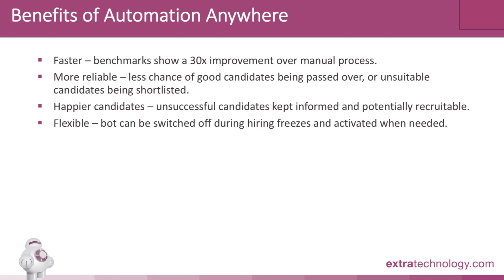A huge generic benefit of Automation Anywhere is that bots can be switched off and then activated later when needed. In a recruitment context, this flexibility means that if there were, for example, a hiring freeze, the recruitment bot could be switched off and then reactivated when the freeze was over. Thanks for your time and interest. I hope we've provided you with useful information on how Automation Anywhere revolutionizes day-to-day operations like recruitment, and how it makes business operations more flexible and more efficient.